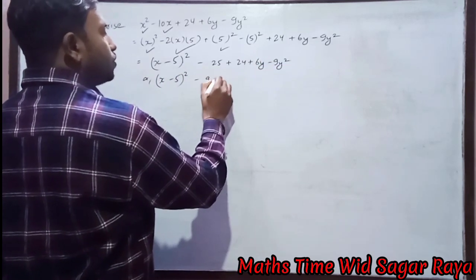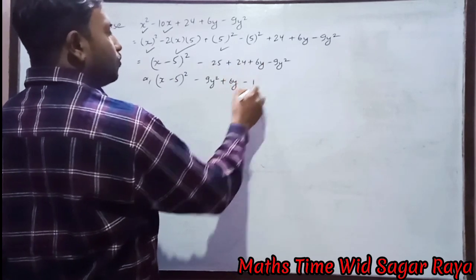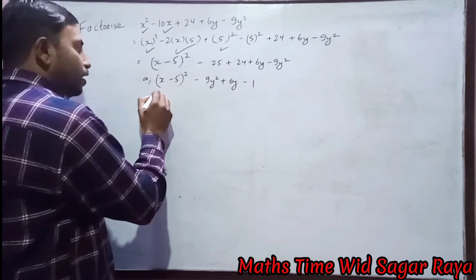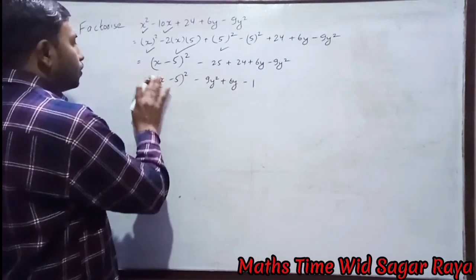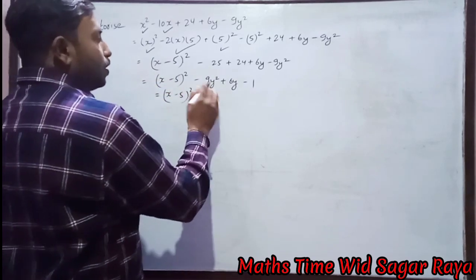Or (x - 5)² equals, first of all let's write -9y², then +6y, and -25 + 24 means -1. Since 25 is bigger, we have to keep a minus sign.